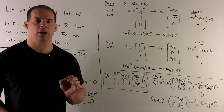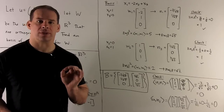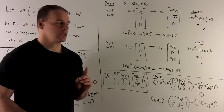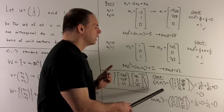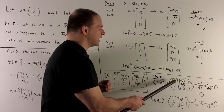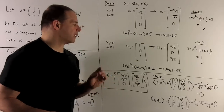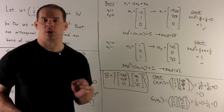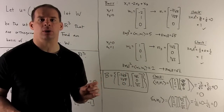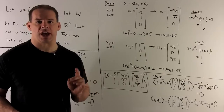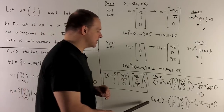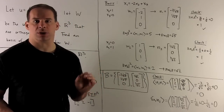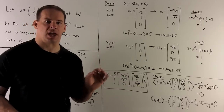To check our work, we verify that both vectors are orthogonal to U. Taking the inner product of U = (1, 2, -1) with N1 = (-2/√5, 1/√5, 0): we get -2/√5 + 2/√5 + 0 = 0. That checks out. Taking U against N2 = (1/√2, 0, 1/√2): we get 1/√2 + 0 - 1/√2 = 0. That checks out also.